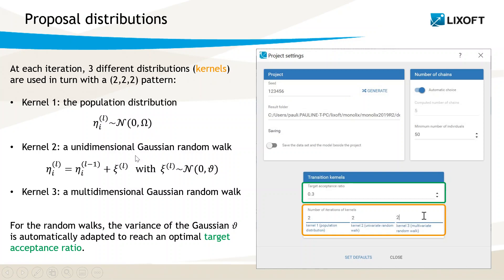The second is a unidimensional Gaussian random walk, where each random effect drawn at the previous iteration is perturbed with a random variable drawn from the normal distribution. The third is a multidimensional Gaussian random walk, where the vector of random effects drawn at the previous iteration, for a random subset of parameters, is perturbed with a Gaussian vector. For the random walks in kernels 2 and 3, the variance of the Gaussian random variables is adjusted at each iteration to reach an optimal acceptance ratio. By default, it is 0.3 and can also be changed in the project settings.